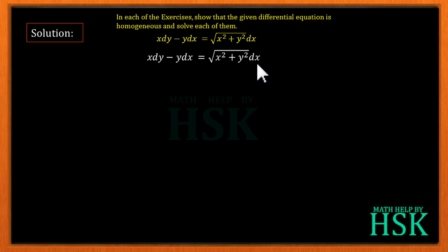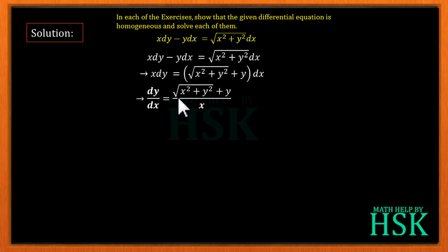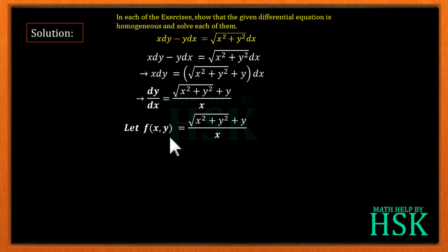We take the differential equation and first we are going to prove that it is homogeneous. For that I require the value of dy/dx, so I'm going to form an expression for dy/dx. Taking y dx to the right hand side and taking dx common from both terms, I get x dy = √(x² + y²) + y times dx. It is clear that dy/dx = (√(x² + y²) + y) / x.